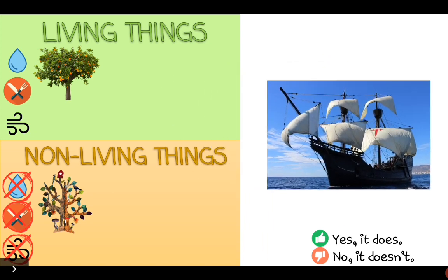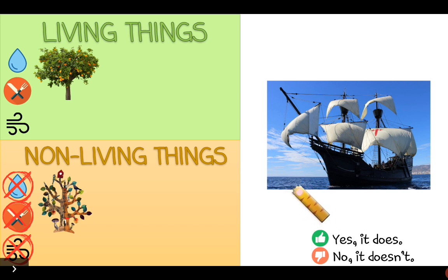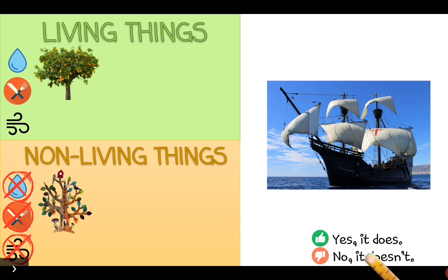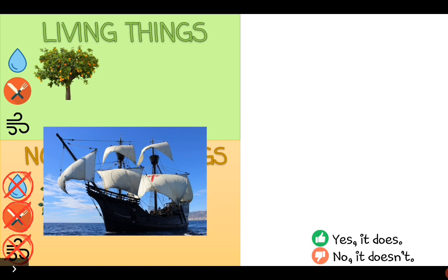What about this? This is the Victoria ship. Does the Victoria ship need water? It needs water to navigate, to sail, but not really to live. No, it doesn't. Does the Victoria ship need food? No, it doesn't need any food. And does it need air? No, it doesn't. So is the Victoria ship a living thing or a non-living thing? Good job — it's a non-living thing!